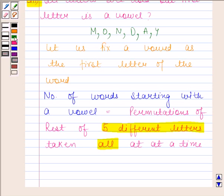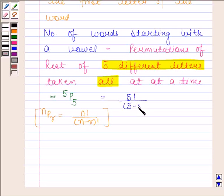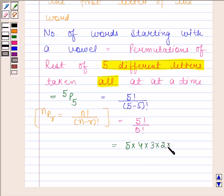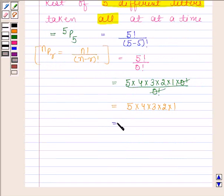The number of permutations of the remaining 5 different letters taken all at a time is 5P5. We know that NPR equals N factorial upon N minus R factorial. Here N is 5 and R is 5, so 5P5 equals 5 factorial upon (5 minus 5) factorial, which is 5 factorial upon 0 factorial. Now 5 factorial equals 5 × 4 × 3 × 2 × 1 × 0 factorial. Canceling 0 factorial from numerator and denominator, we are left with 5 × 4 × 3 × 2 × 1, which simplifies to 120.